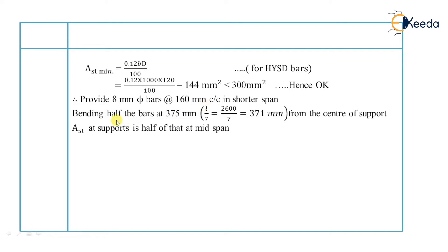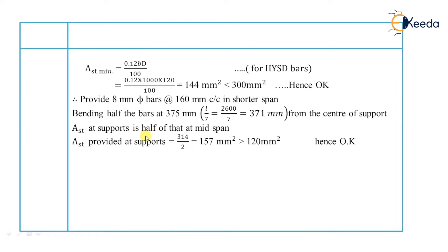We are bending the bars in alternate fashion. Therefore, AST at the support is half of that at mid-span. The bars are bent at a length of 375 mm from the center of support. This comes from the criteria that bending should be at L/7: 2600/7 equals 371 mm, rounded up to 375 mm. AST provided at the support equals 314/2, which is 157 mm².